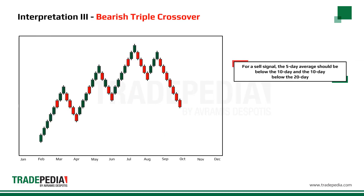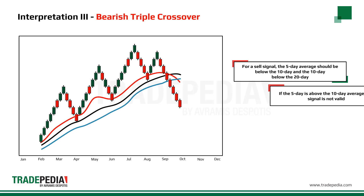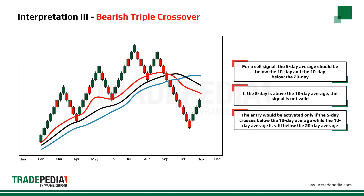For a sell signal, the 5-day average should be below the 10-day and the 10-day below the 20-day. If the 10-day has just given a sell signal by crossing below the 20-day but the 5-day is above the 10-day, the signal is not valid. The entry would be activated only if the 5-day crosses below the 10-day while the 10-day is still below the 20-day.